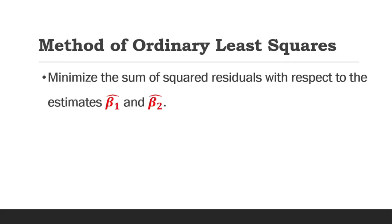Now, we can estimate the parameters beta 1 hat and beta 2 hat by minimizing the sum of squared residuals with respect to these estimates.